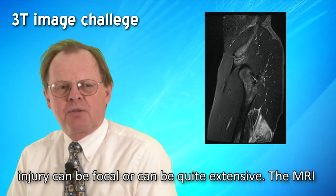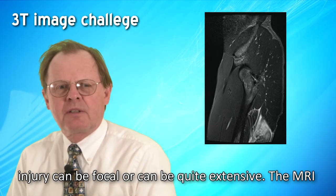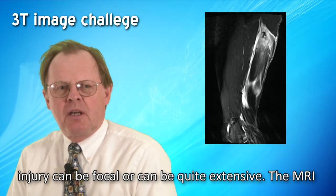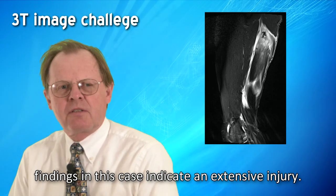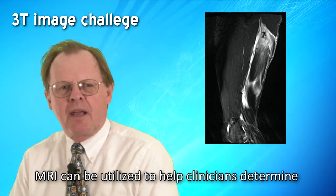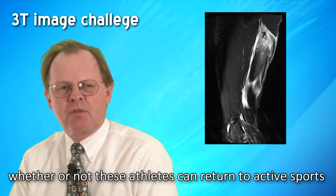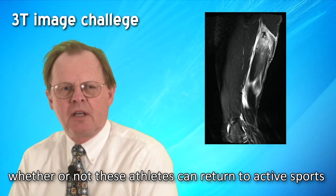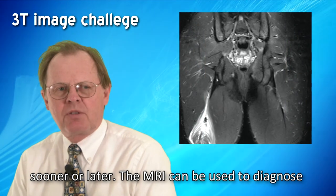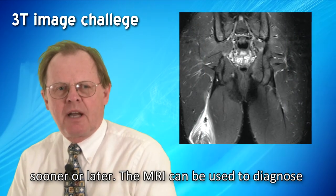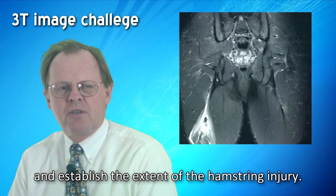The hamstring injury can be focal or can be quite extensive. The MRI findings in this case indicate an extensive injury. MRI can be utilized to help the clinician determine whether or not these athletes can return to active sports sooner or later, and can be used to diagnose and establish the extent of the hamstring injury.